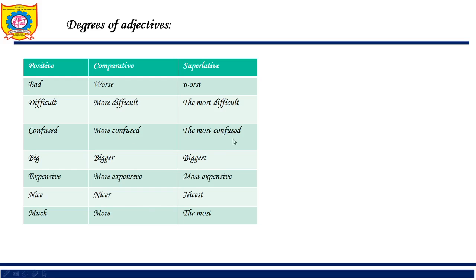'I'm confused' — 'I'm more confused than you' — 'I'm the most confused person in my family' because I'm comparing myself with the whole family. Then: 'It is a big house' — 'It is bigger than our house' — 'It is the biggest house in the town.'